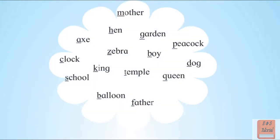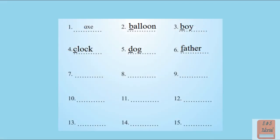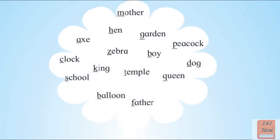After D, the letter that comes is E. Is there any word with E in the given word cloud? No. So we have to go to the next alphabet, which is F. With F, we have father. After F, what comes? G. With G, the word that is given is garden.